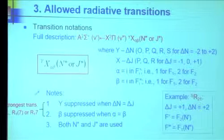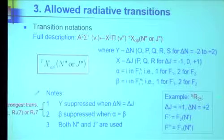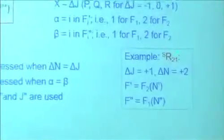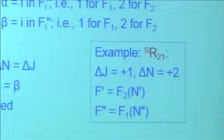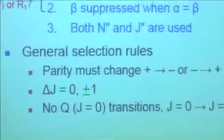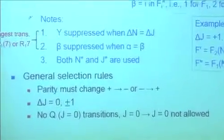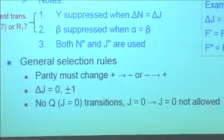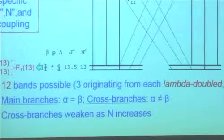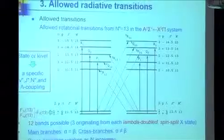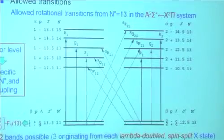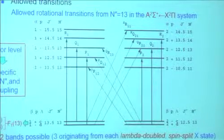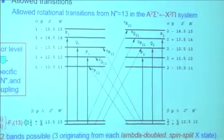It is possible for delta N to be two when delta J is one — those are weak. The inviolate rules: parity must change, and delta J must be zero or plus/minus one. You can't have zero to zero. When you put all those rules together you get back to the diagram I showed — all of the allowed transitions. You should look at that diagram and ask: do I understand why there's not a line in a certain place?